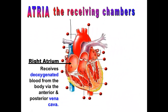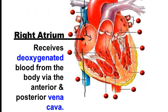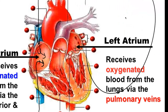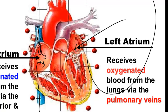The atria are the receiving chambers — they receive the blood from the body and from the lungs. The right atrium receives deoxygenated blood from the body, and it gets that blood from either the superior vena cava or the inferior vena cava. The left atrium, on the other hand, receives fresh, red, oxygenated blood from the lungs — specifically from the pulmonary veins.